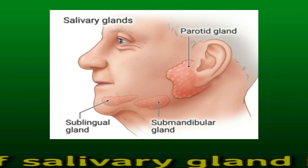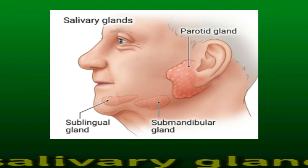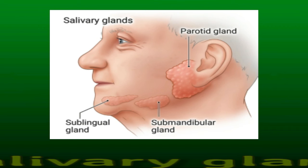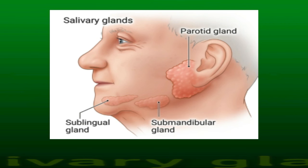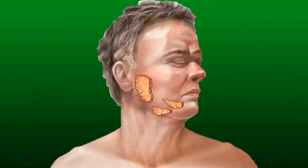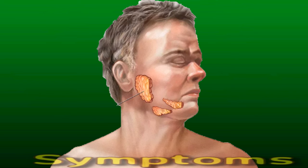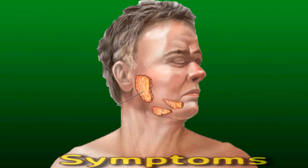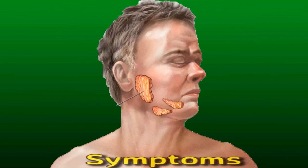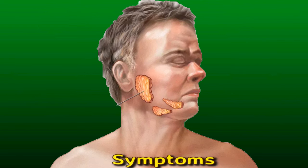The parotid and submandibular glands tend to become infected most often. If a salivary gland infection develops very quickly, a doctor may call it acute. Infections related to obstructions or narrowed tubes may develop more gradually. Symptoms of a salivary gland infection may include a fever, chills, pain and swelling around the affected area, pus in the mouth, a foul taste in the mouth, and difficulty opening the mouth, chewing, or swallowing.